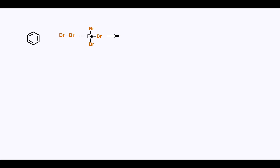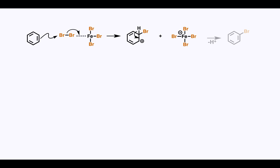Now let's show this mechanism with conventional arrow pushing. Benzene uses its double bond to attack activated bromine, and the Br⁻ that's displaced forms a new bond with iron. The drive for this compound to become aromatic again is so great that we can show a spontaneous deprotonation and just write minus H⁺ under the arrow.